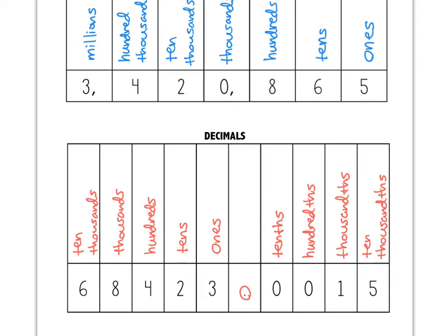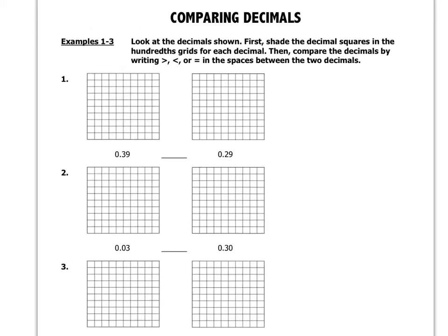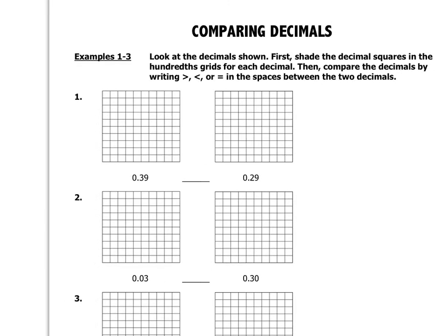So that covers the different place value columns for whole numbers and decimals, which is very useful to review when we're talking about comparing decimals — what we're going to look at first in this video. When comparing decimals, I want to show you how to do this visually using what I call a decimal grid. We're going to compare decimals using either a greater than sign, a less than sign, or an equal sign. We'll shade decimal squares in hundredths grids.